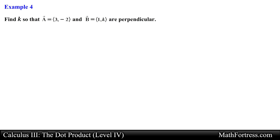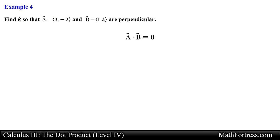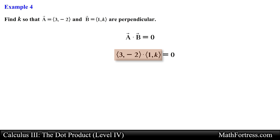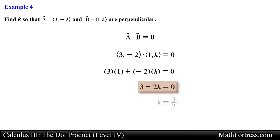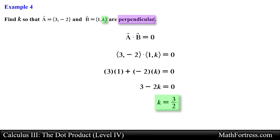Find k so that vector a and vector b are perpendicular. We have two planar vectors and need to find the value of k that makes them perpendicular. We find an expression for the dot product using the component definition and then set it equal to zero. This gives us a linear equation, which we solve for k, obtaining k equal to three halves. Replacing k with three halves makes both vectors perpendicular to one another.